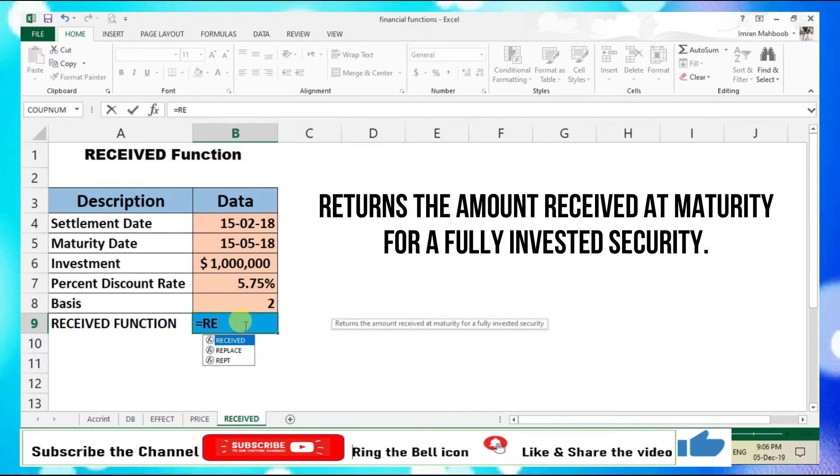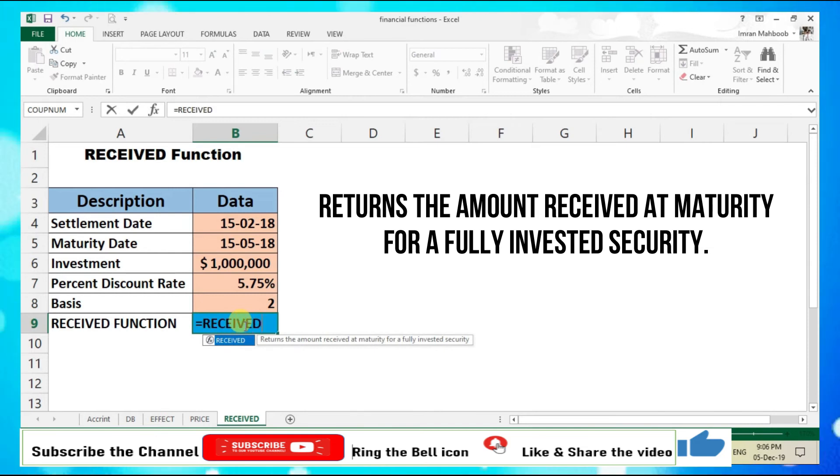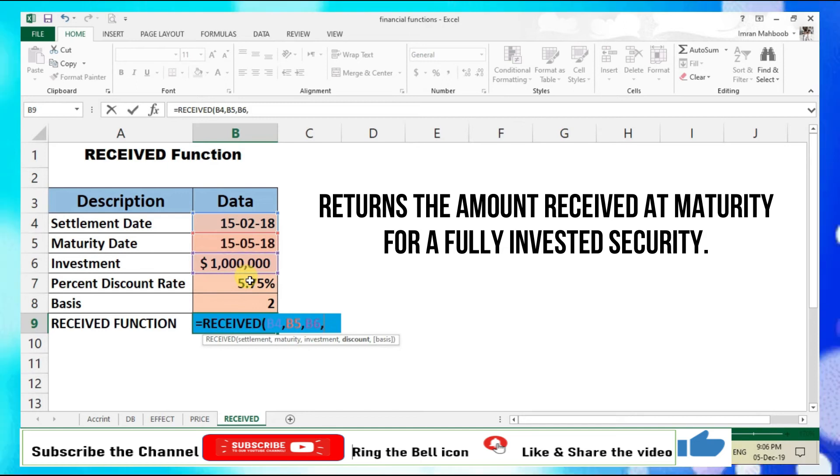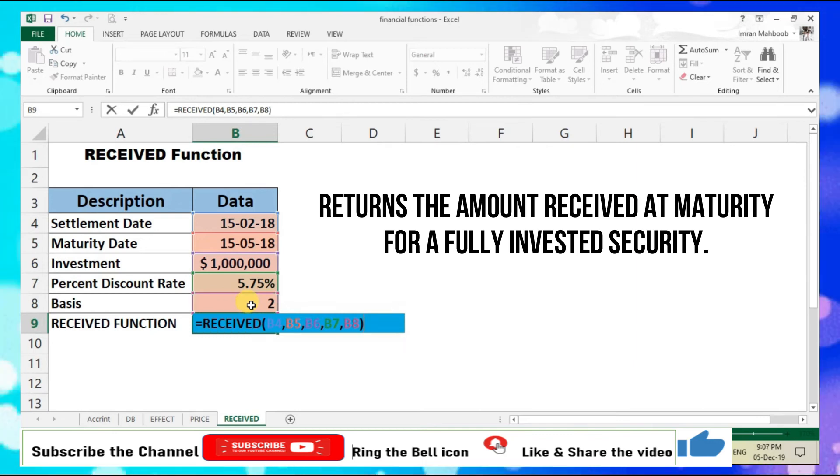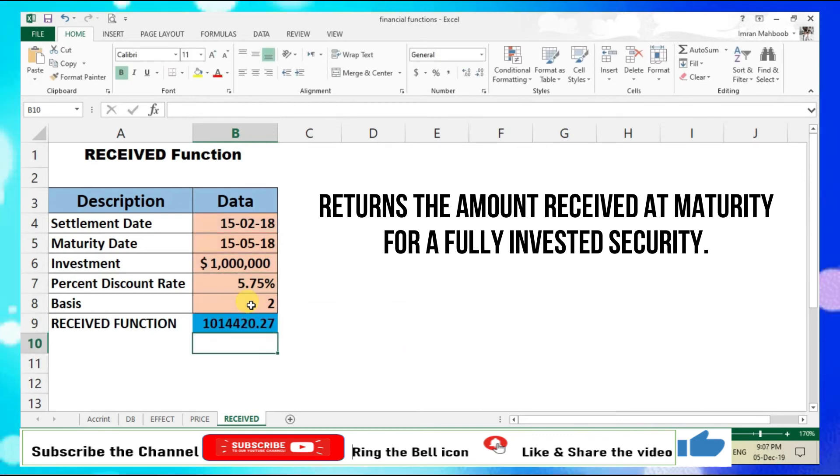Let's put the formula into the formula cell. Equals RECEIVED, open parenthesis, settlement date comma, maturity date comma, investment comma, discount rate comma, basis, close parenthesis and enter. The total amount to be received at maturity is calculated.